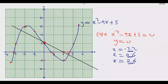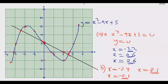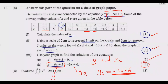You will notice that the straight line intersects the cubic curve at three points. Reading off those intersection points: the first is at approximately x = -2.4, the second is at approximately x = -0.1, and the third is at approximately x = 2.5. These are the three values of x that are the solutions. Once you do this, you get the three marks, bringing the total to nine marks.